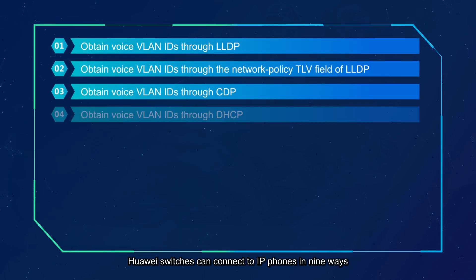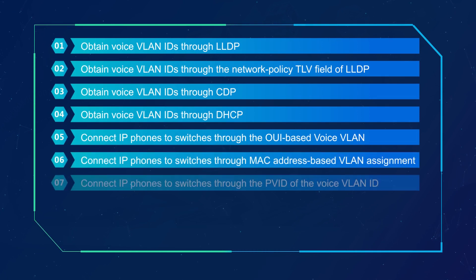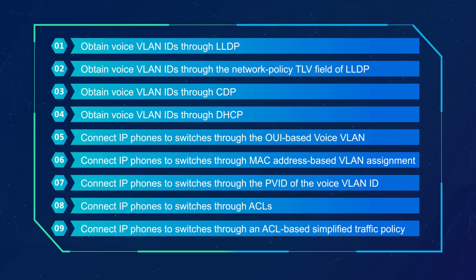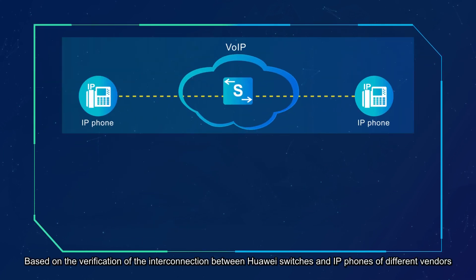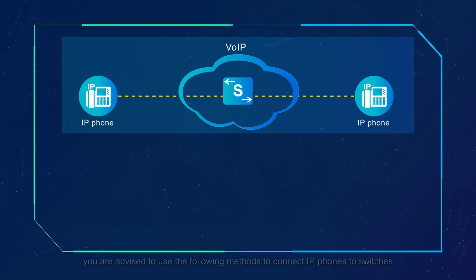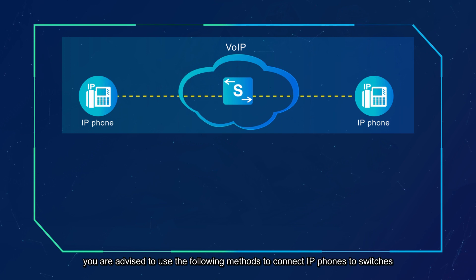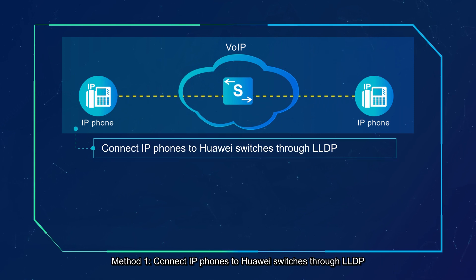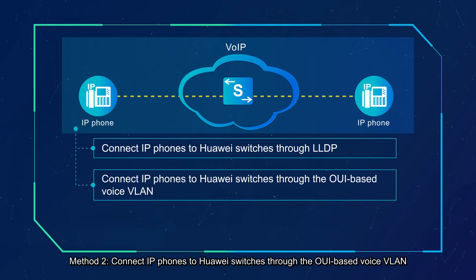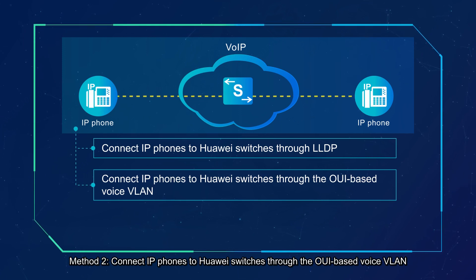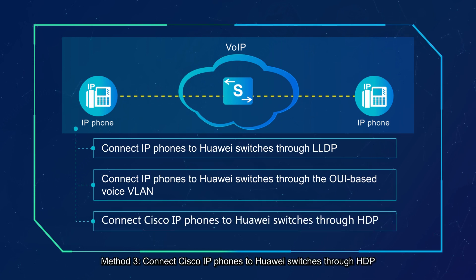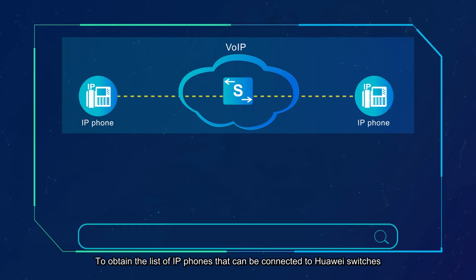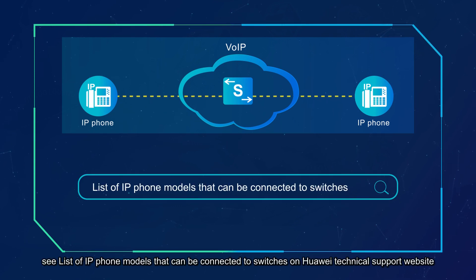In total, Huawei switches can connect to IP phones in nine ways. Based on the verification of the interconnection between Huawei switches and IP phones of different vendors, you are advised to use the following methods: Method 1 — connect IP phones to Huawei switches through LLDP; Method 2 — connect IP phones to Huawei switches through the OUI-based voice VLAN; Method 3 — connect Cisco IP phones to Huawei switches through CDP. To obtain the list of IP phones that can be connected to Huawei switches, see the List of IP phone models on the Huawei Technical Support website.